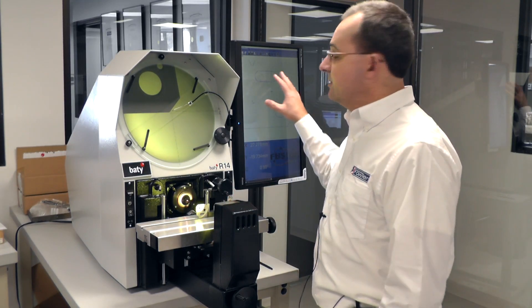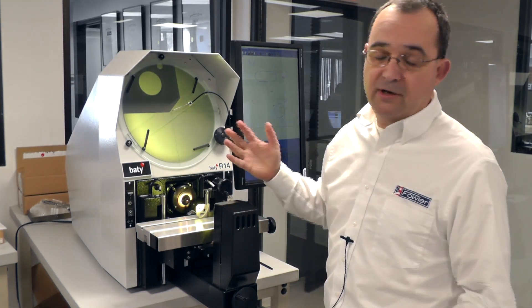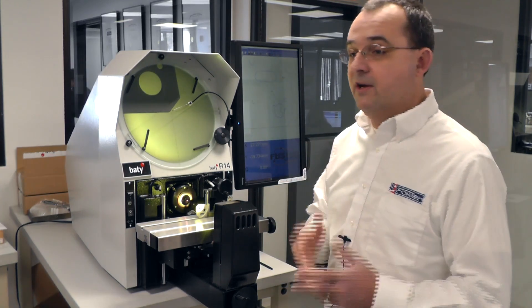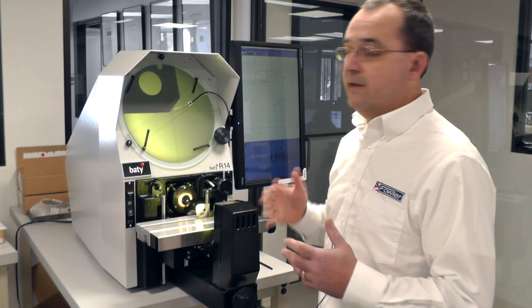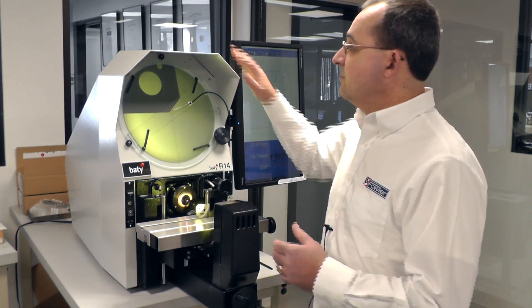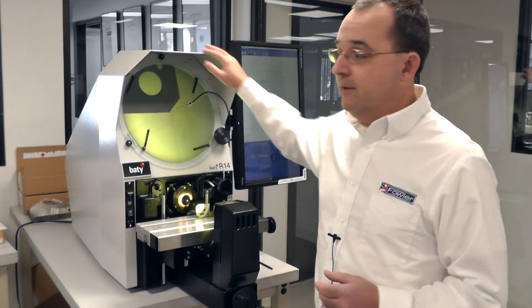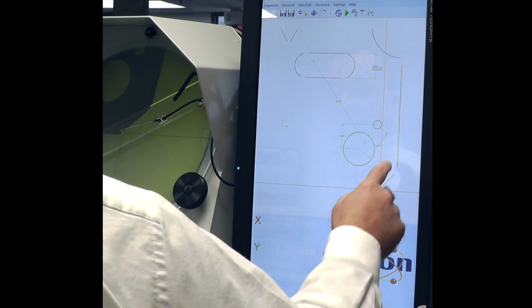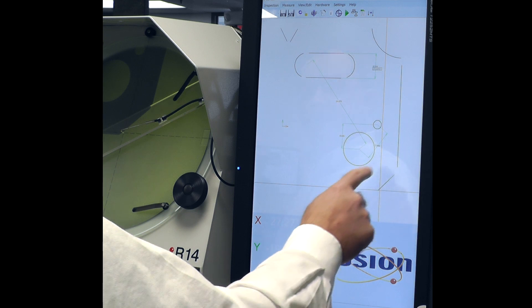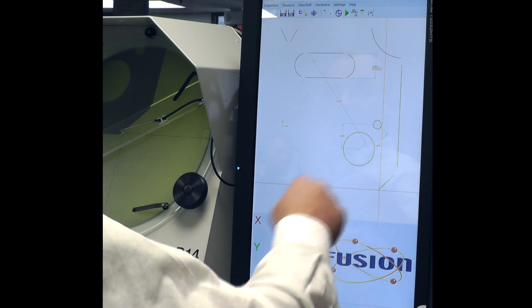One of the big advantages to this type of product is that you can construct lots of different features from previously measured features, which would be near impossible to do on a small readout that you may already have on your optical comparator. For this example, I'm going to construct a point on the intersection of these two lines that you can see right here.